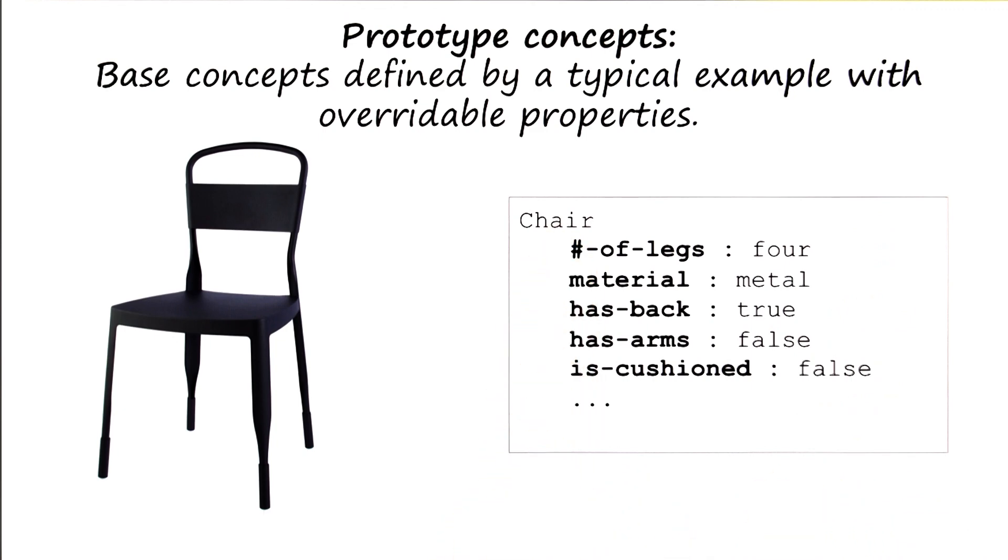Thus, these properties can be overridden in case of specific instances. But we'll still have the basic notion of a prototype of a chair, so that we can communicate with each other about what a chair is.